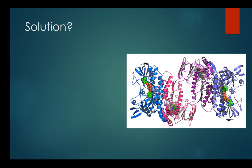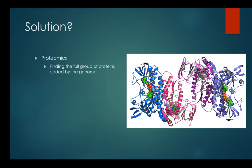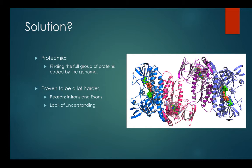The solution to this problem is what they're now working on — the current project in biology called proteomics. We now have the entire DNA sequence of the human genome, but we need to find out all the proteins the human genome can make, because DNA is not all the proteins due to introns and exons. Proteomics is trying to find out all the proteins involved. This has been a lot harder — if the Human Genome Project took four years and millions of dollars, proteomics is probably going to take us decades. As computers get faster, we're getting better at understanding how all the proteins and introns and exons work, but we've got a long way to go.